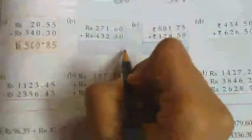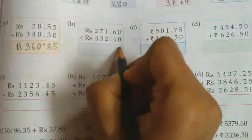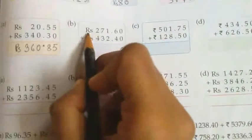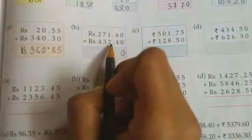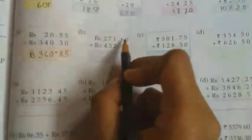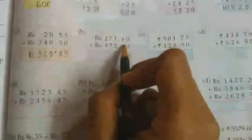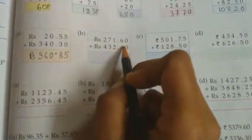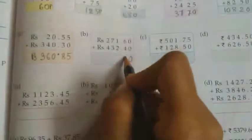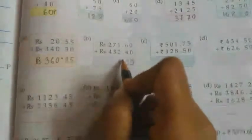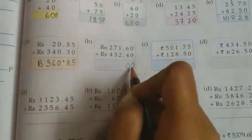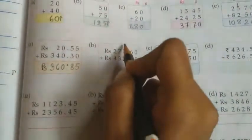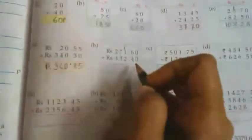Here also see, sums given as rupees 271 rupees 60 paise and 432 rupees 40 paise. So we will start from most right side, that is from the paise. 0 plus 0 equals 0, 4 plus 6 equals 10. We can write 10 here, but as you know that 100 paise is 1 rupee, so we will carry the 1 over to rupees.